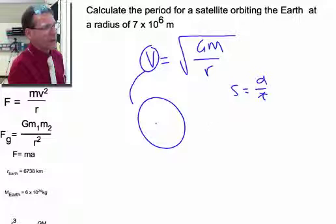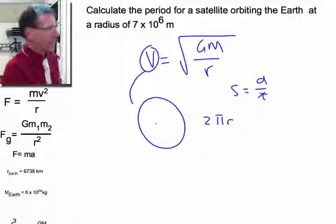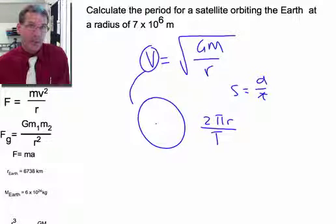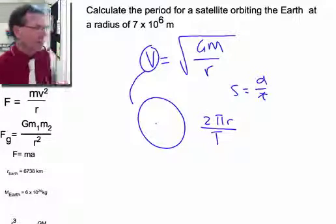So therefore, the distance is going to be 2 pi R, which is the circumference, which is the radius for the circumference of the circle, divided by big T,